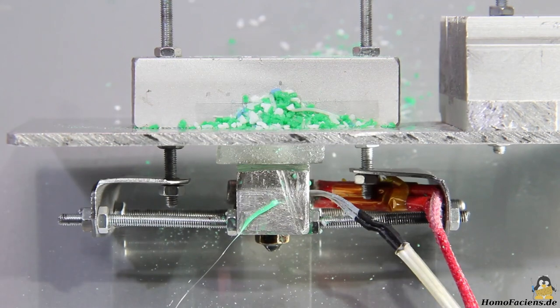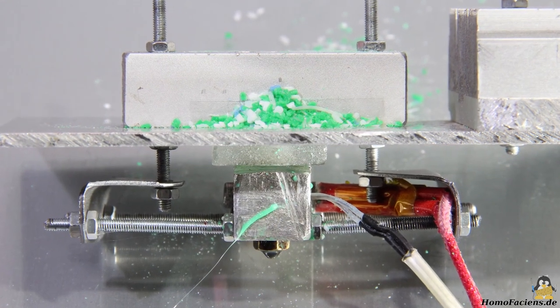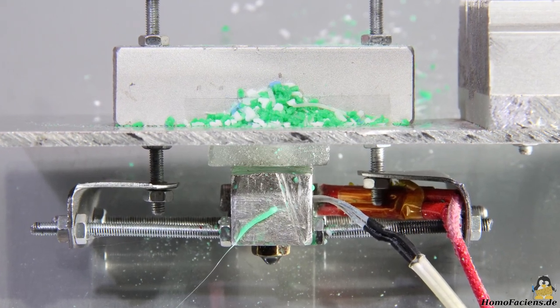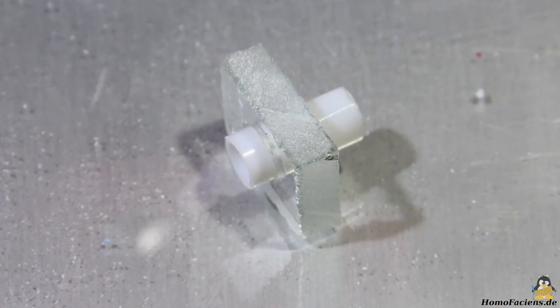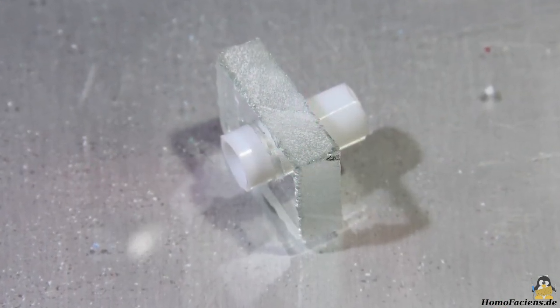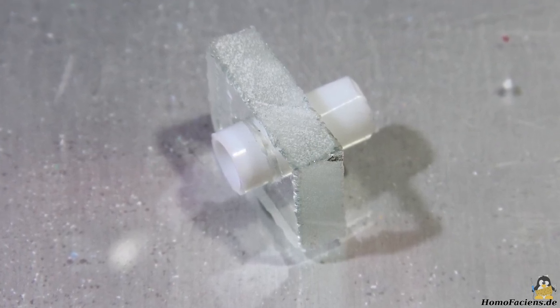The more heat flows from the hot end to the cold end, the more the hot end has to be heated and the cold end to be cooled. Efficiency is the key word. Glass has a thermal conductivity that is 100 times lower than that of aluminum, which is why I use it as a heat barrier.